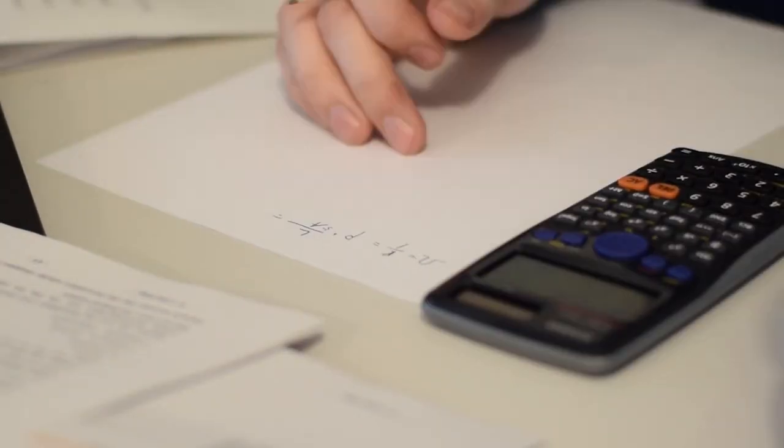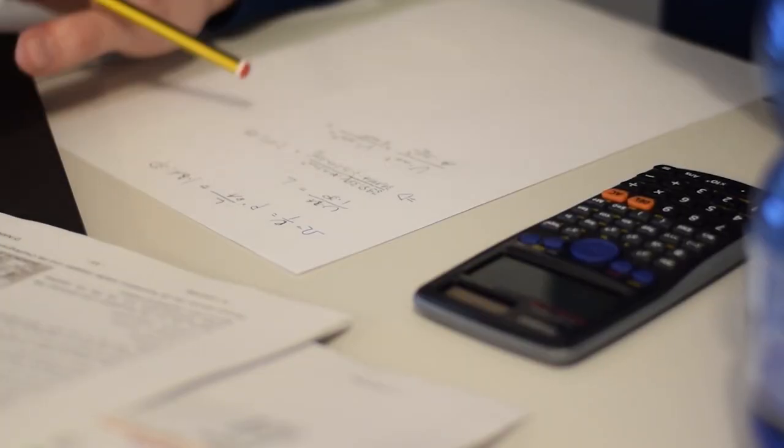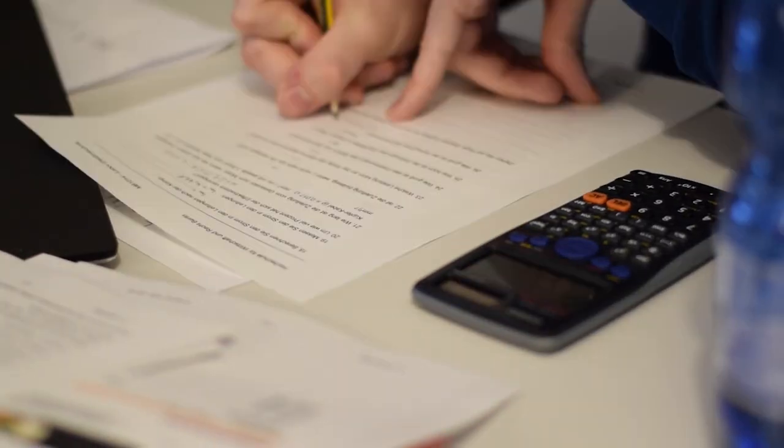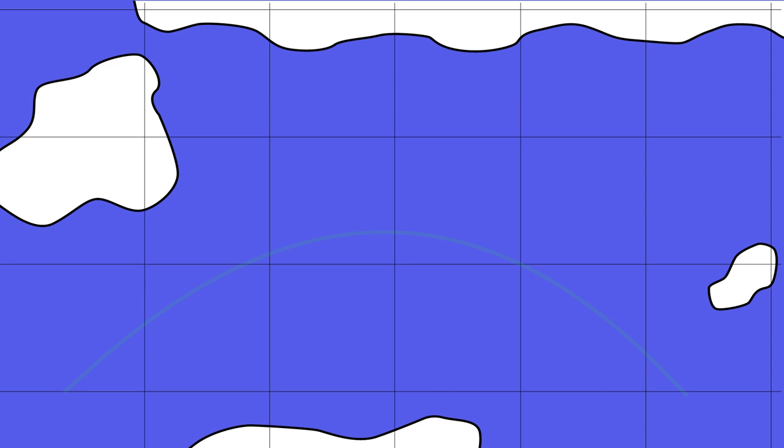In reality, we use spherical trigonometry to manually calculate information about the great circle track. We can find the highest point, or the point where your heading is due east or due west. We can also find the heading that we need to set off at.